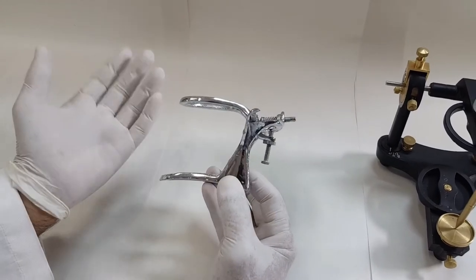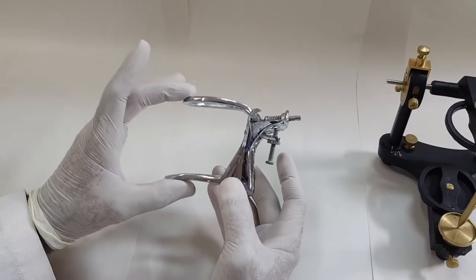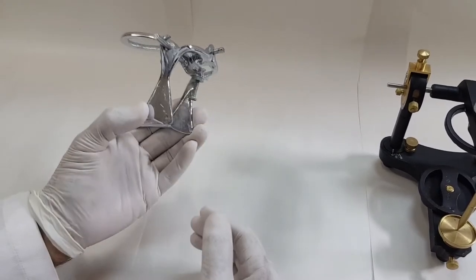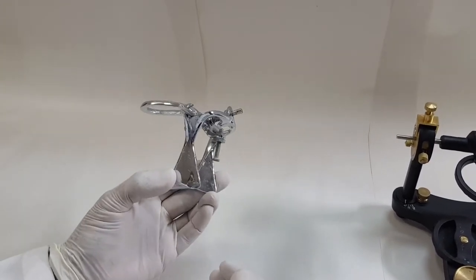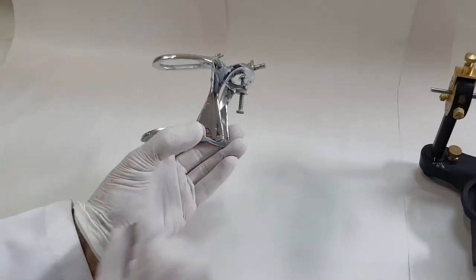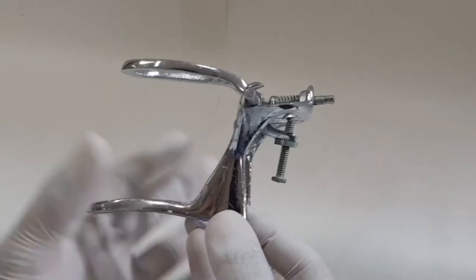But for further complex procedures, this articulator is inadequate. The requirements for a plain line articulator is that you need to have a screw at the end which maintains the separation between the maxilla and the mandible. Always make sure that this screw is touching the top of the articulator.